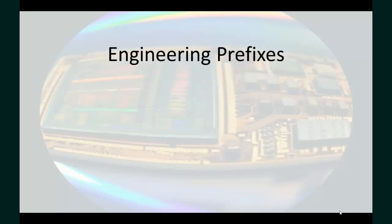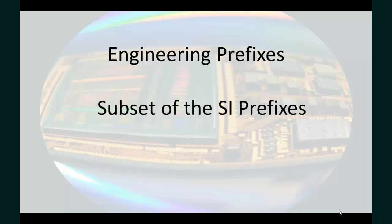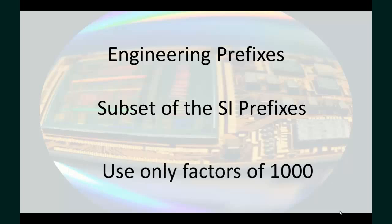Along with units, we have prefixes that help us to communicate. In engineering, we use a subset of SI prefixes, and we only use prefixes associated with factors of 1,000. The engineering prefixes are summarized in this table.